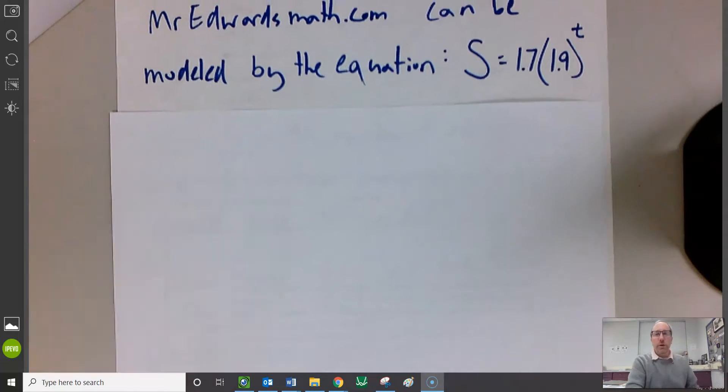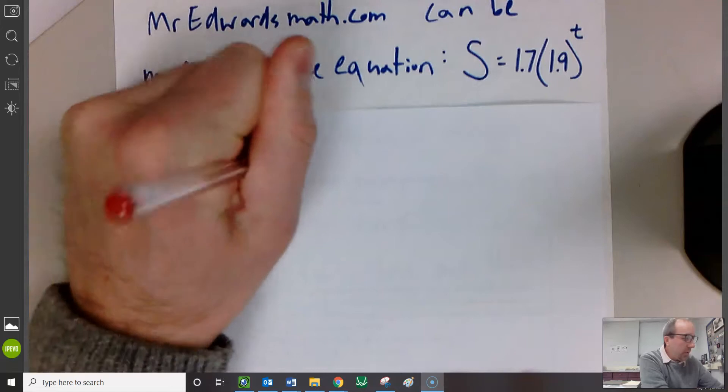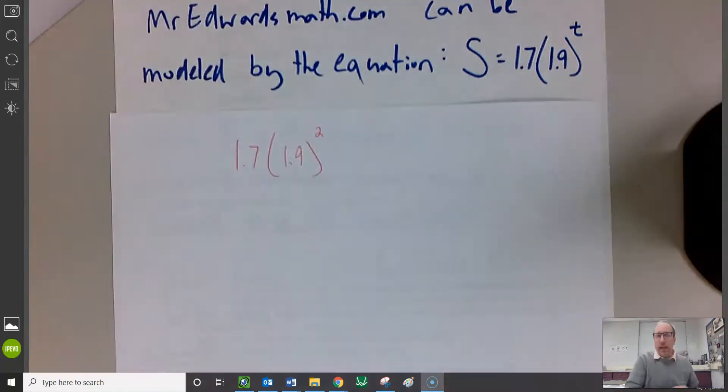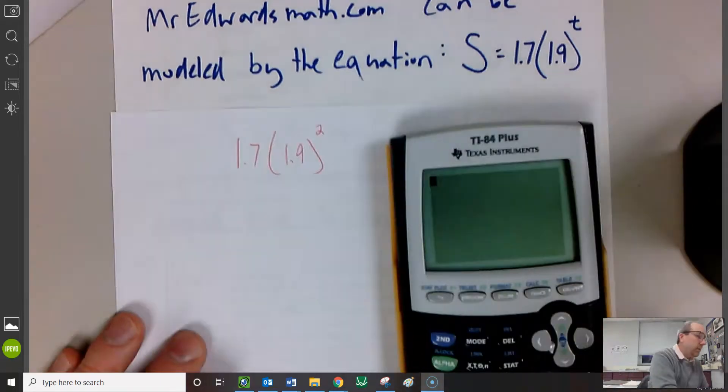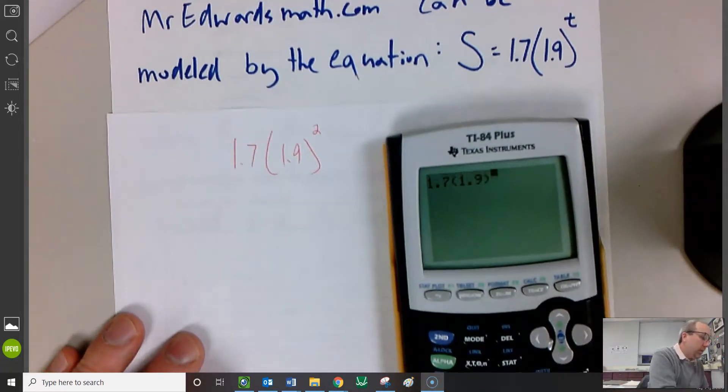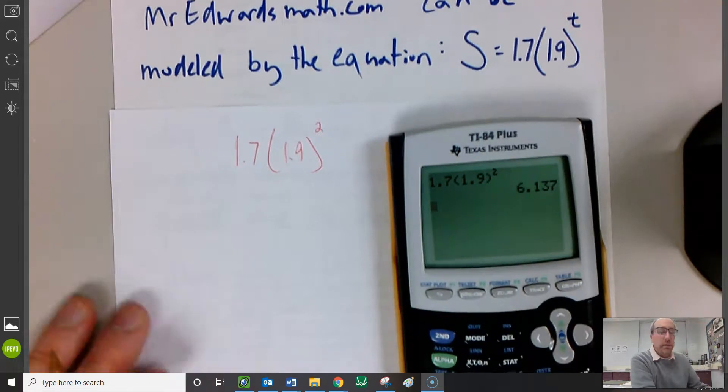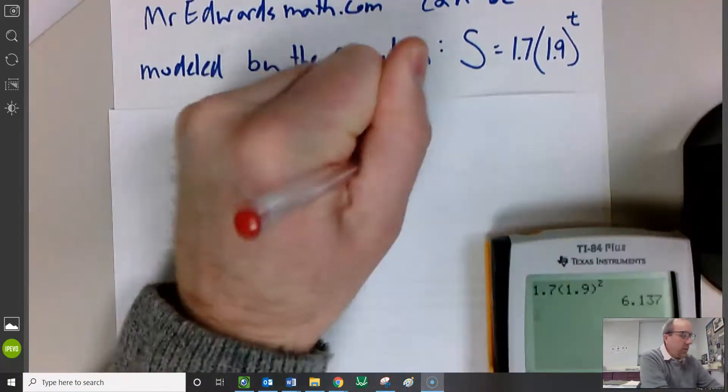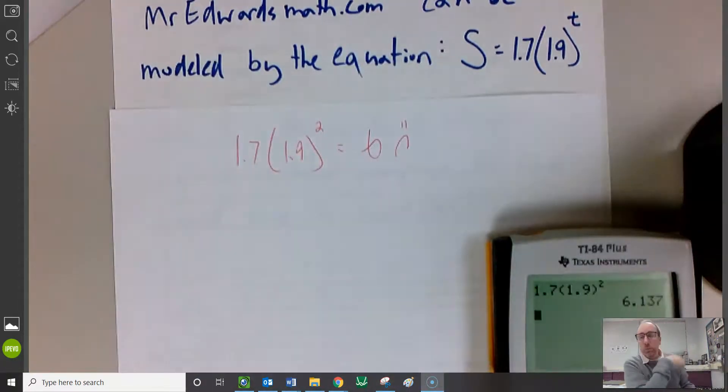So the first one was, after two months, how many subscribers are there? That's 1.7 times 1.9 to the second power. We can just jam that in our calculator, and we get six. Sad face. Well, it's only been out for two months, and there's only six subscribers. I need to get the word out.